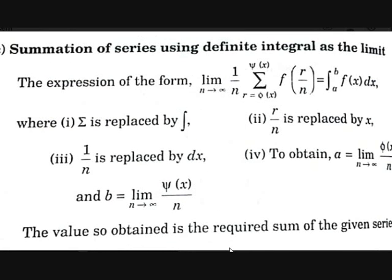That is how you solve using the Newton-Leibnitz formula. Now let's see another theorem: the summation of series using the definite integral as the limit — how to use the definite integral as a summation. The expression is: limit as n→∞ of (1/n) · Σ[r = φ(x) to ψ(x)] f(r/n) = ∫ₐᵇ f(x) dx.